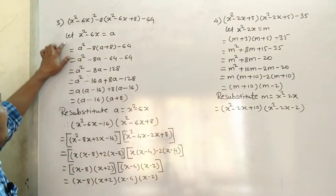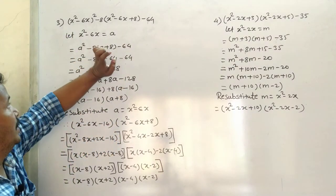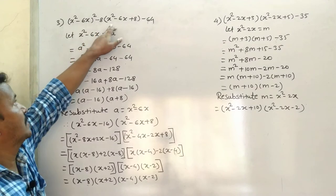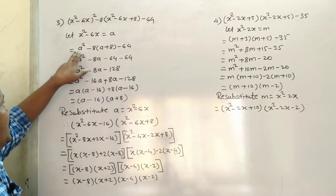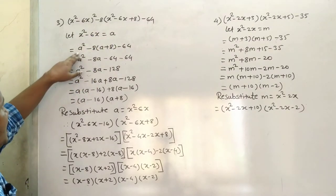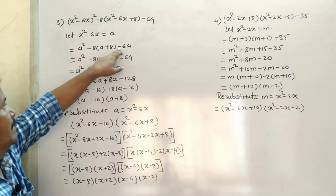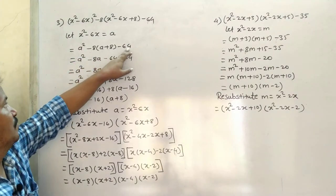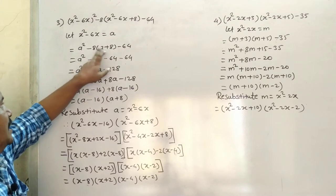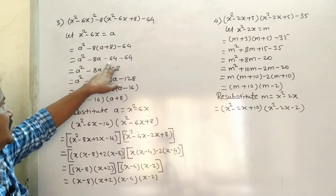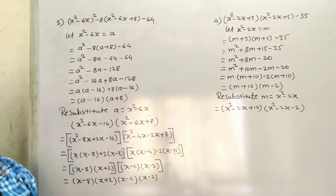Right. Let x² - 6x be equal to a. So the new polynomial becomes a² - 8a + 8, which gives us a² - 8a + 8 - 64. So minus 8 plus 8 minus 64, which is minus 64 already.